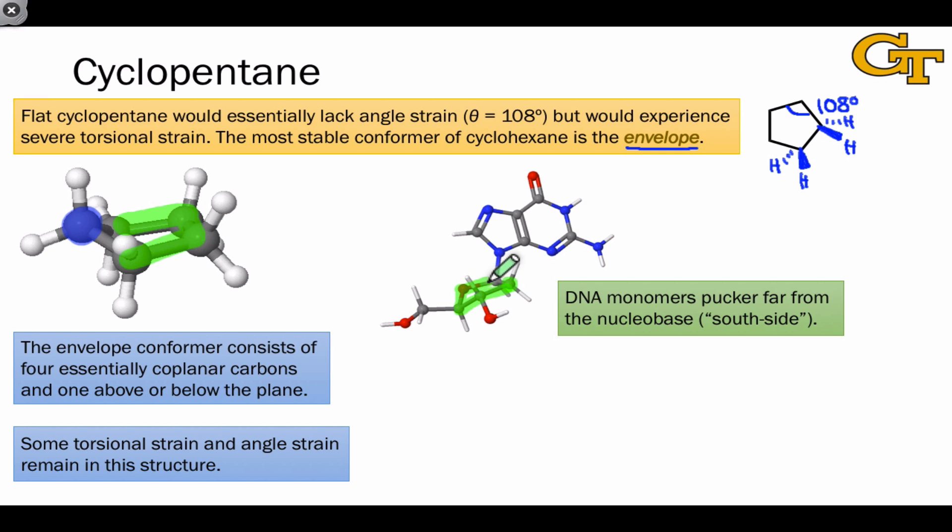DNA prefers to pucker on its south side, far from the carbon where connection to the nucleobase occurs. If we think of this carbon as the north side of the molecule, we see that puckering occurs here, far from that northernmost carbon, which is associated with south side puckering.